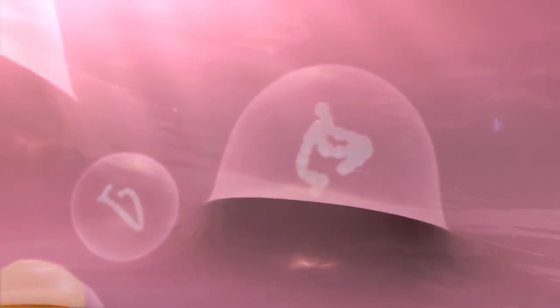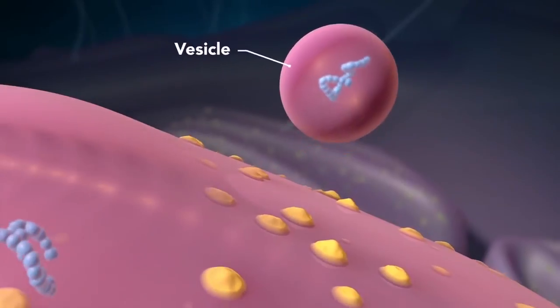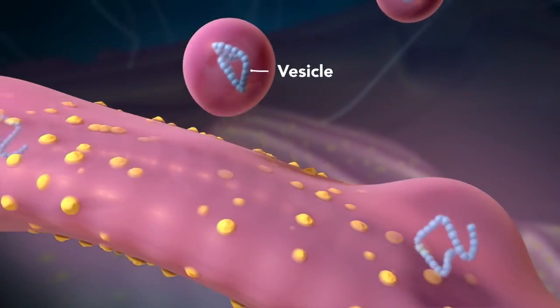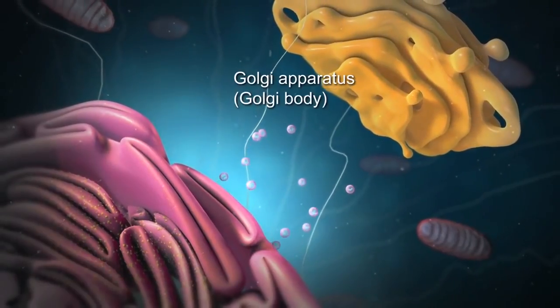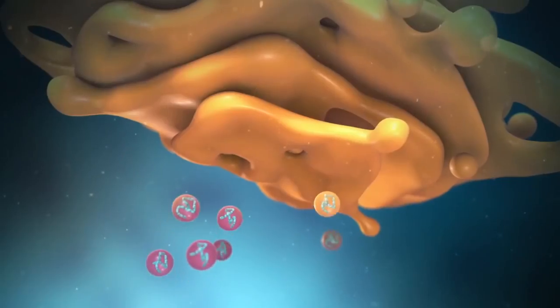Proteins and other materials emerge from the endoplasmic reticulum in small vesicles, where the Golgi apparatus, sometimes called the Golgi body, receives them.